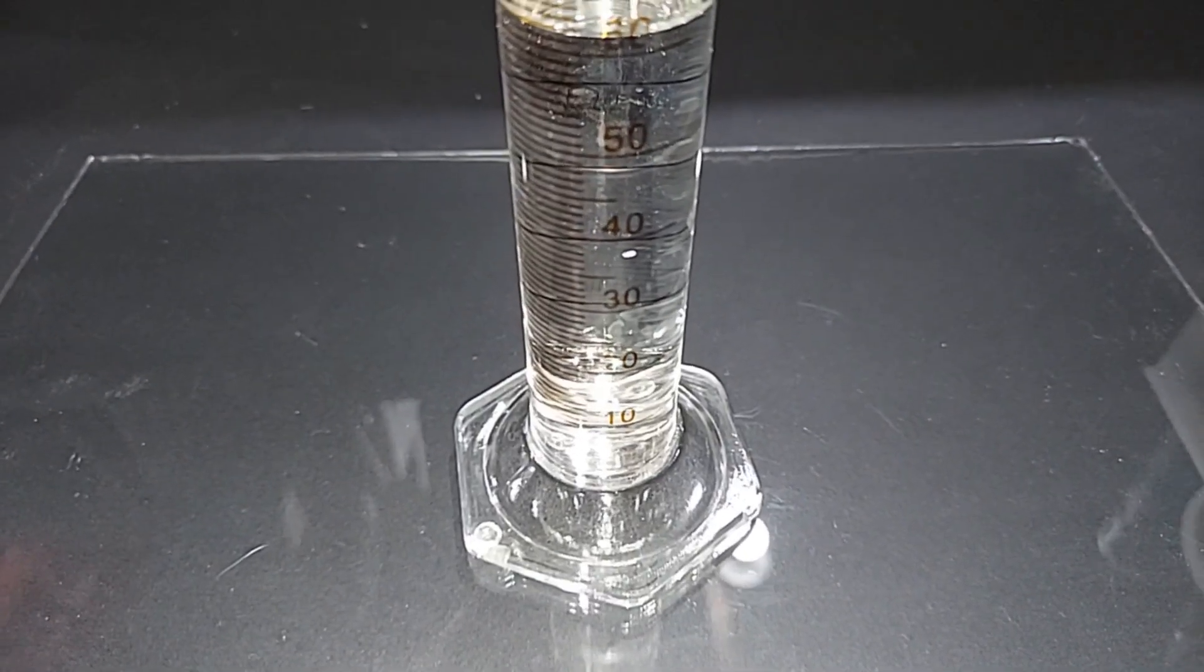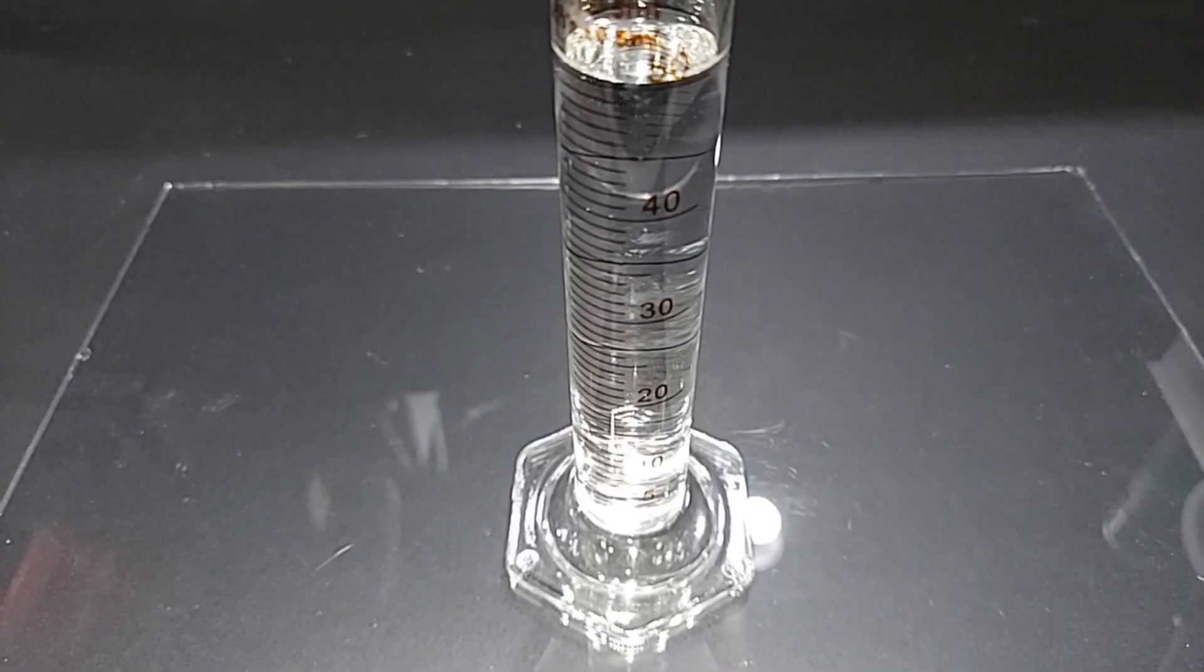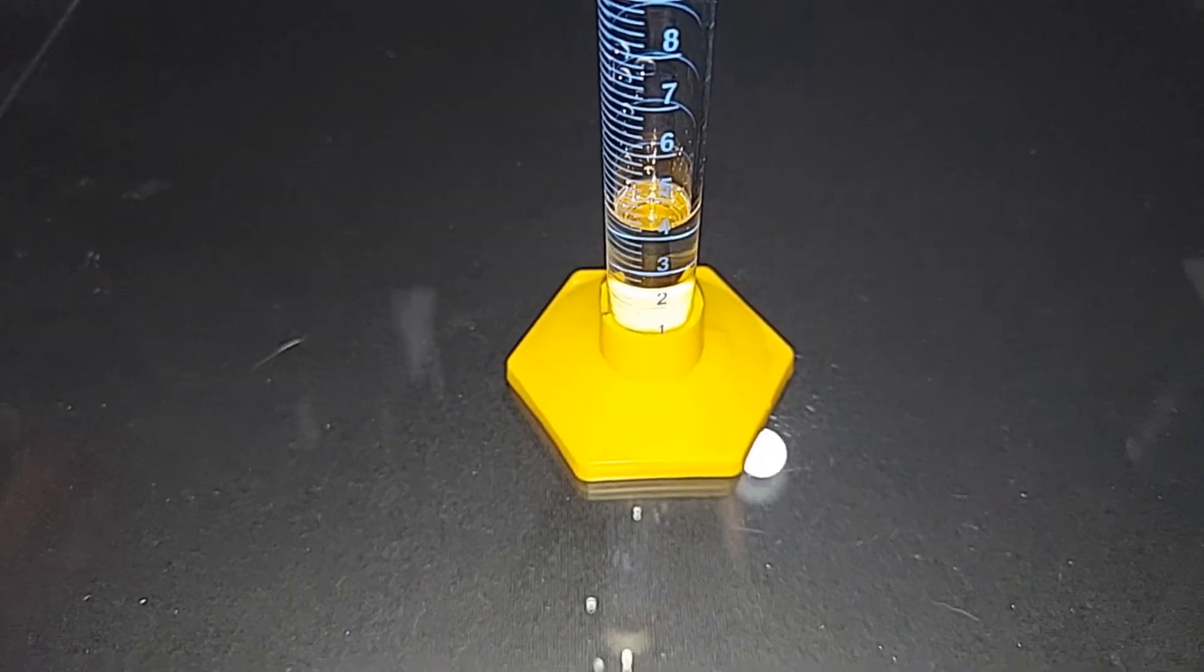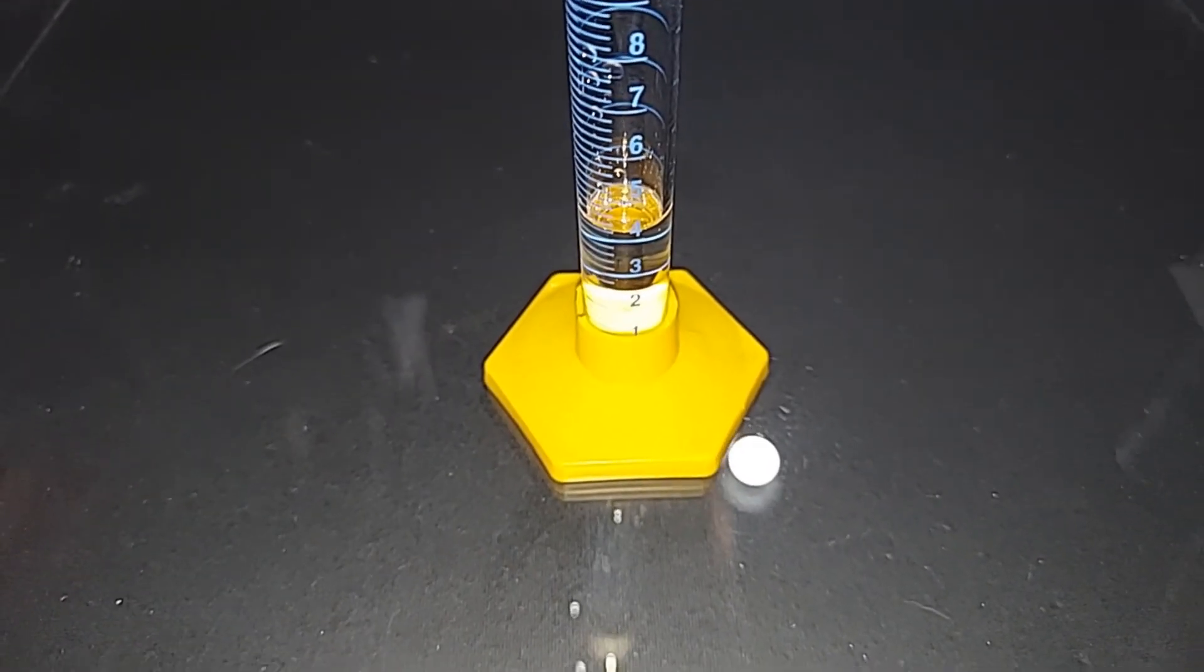60 milliliters of anhydrous ethanol, pre-measured. 50 milliliters of glacial acetic acid, pre-measured. 4 milliliters of 98% sulfuric acid, pre-measured.